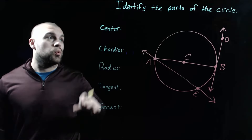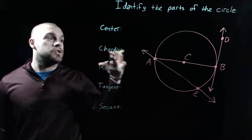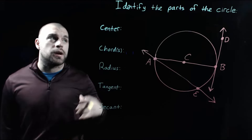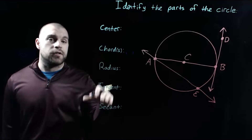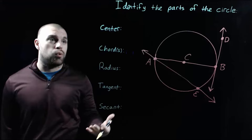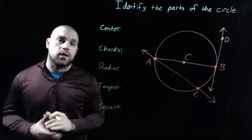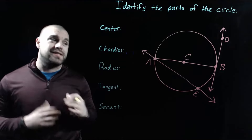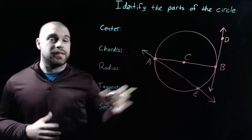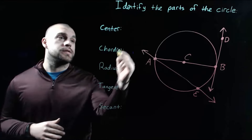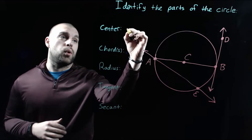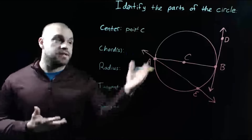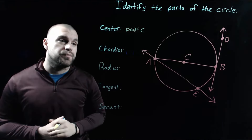So as we're looking at this picture, we're given a bunch of different points, lines, and segments, and we want to identify some of our special vocab words that we just talked about. The first thing we're going to look at is finding the center of the circle. The center is just the point that's in the middle of the circle, so for us that would be point C.